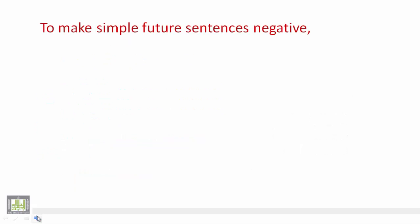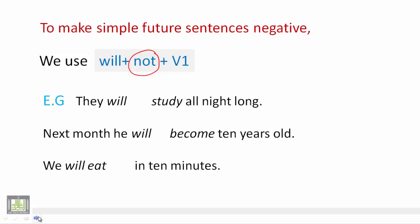To make simple future sentences negative, we use will plus not. So we only add not after will. Let's make these sentences negative.